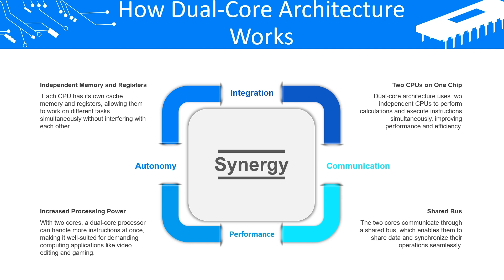Starting with integration: dual core architecture uses 2 independent CPUs to perform calculations and execute instructions simultaneously, improving performance and efficiency. For autonomy, each CPU has its own cache memory and registers, allowing them to work on different tasks simultaneously without interfering with each other.